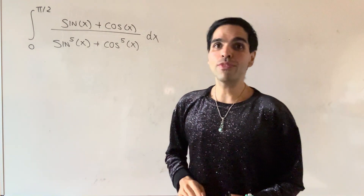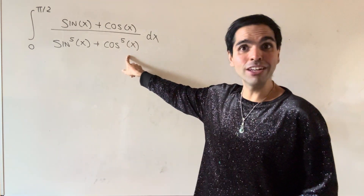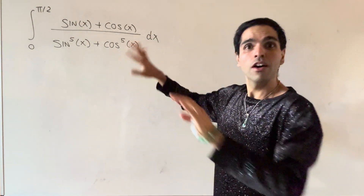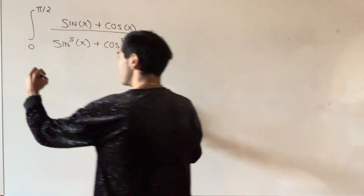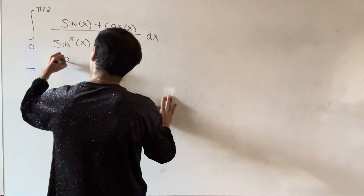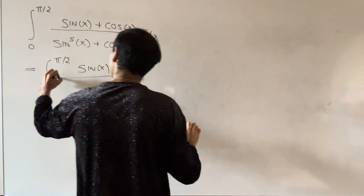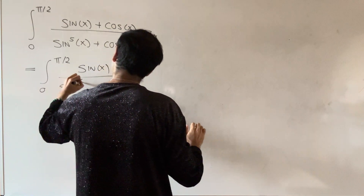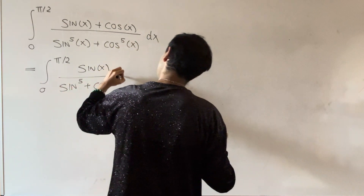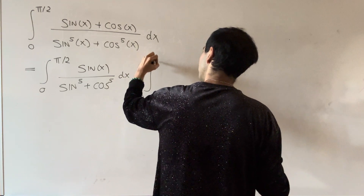Thanks for watching and get ready for a golden adventure — we'll be evaluating this integral. First, let's simplify a little bit. We can split this up as the integral from zero to pi over two of sine of x over sine to the fifth plus cosine to the fifth dx, and then the integral from zero to pi over two of cosine x over sine to the fifth plus cosine to the fifth dx.